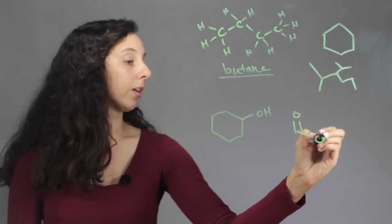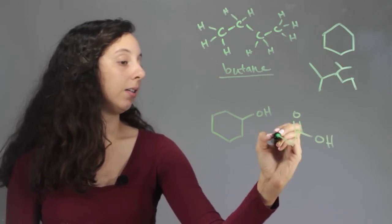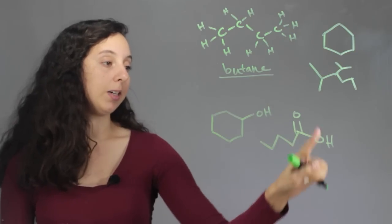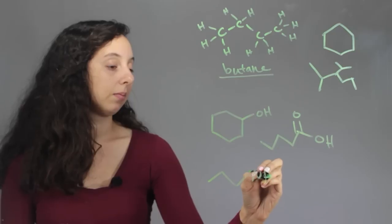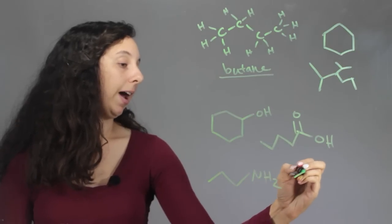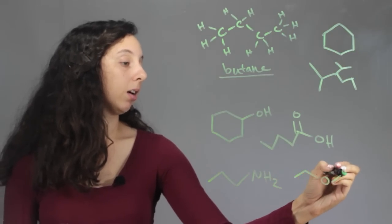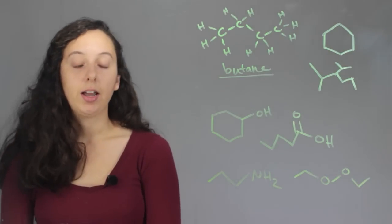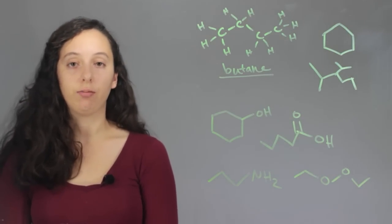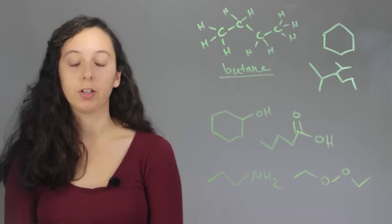We can have a carboxylic acid, still hydrocarbon plus extra stuff. We can have an amine. We can have a break in the carbon chain, peroxide. And really, there's just hundreds of different functional groups that we can add.